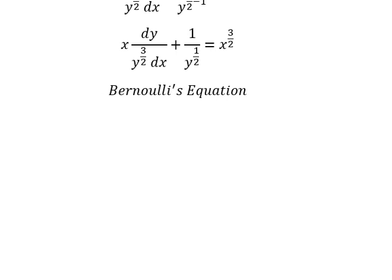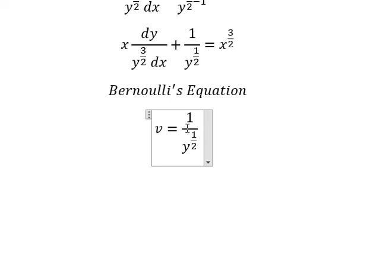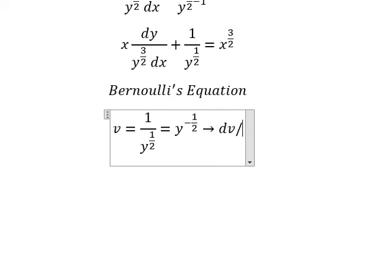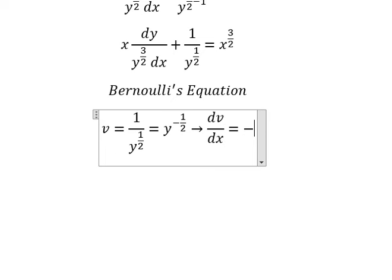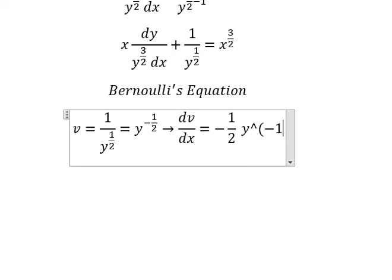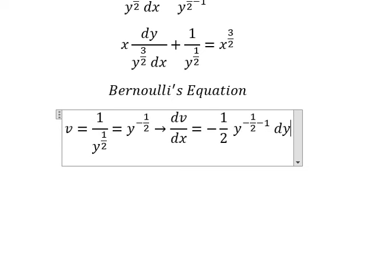So I will let v equal to 1 over y to the power of 1 over 2. If we take the first derivative of this, we need to rewrite it as y to the power of negative 1 over 2. The first derivative gives us dv over dx equals to negative 1 over 2 times y to the power of negative 1 over 2 minus 1, times dy over dx.